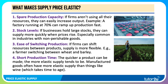And the production time frame. The quicker a product can be made and brought to market, the more price elastic supply will be. Manufactured goods like tinned food, for example, often have a more price elastic supply than things like wine, which takes time to age.